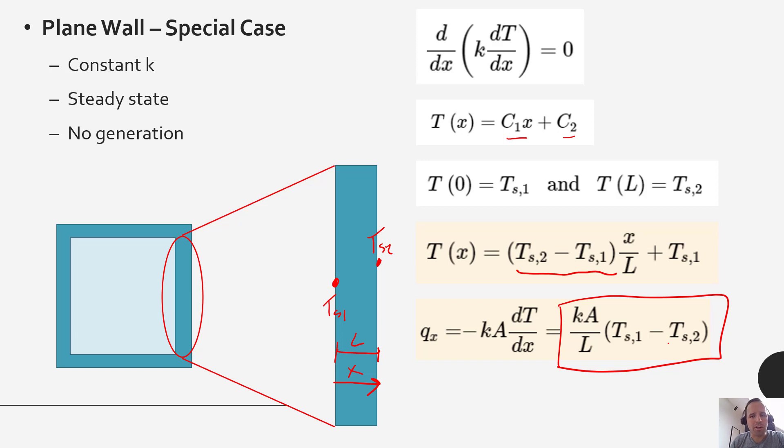So it's important to commit these things to memory for these particular instances. When we have a plane wall with constant k, steady state, and no generation, we see that our temperature profile is a straight line and our flux is constant—and actually this is our flow of heat—that's also constant as a function of x.